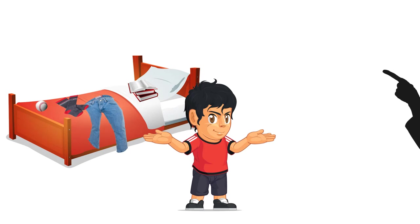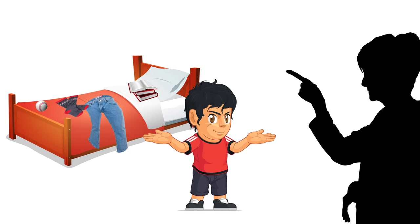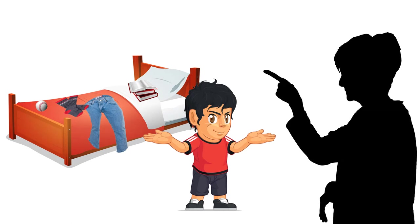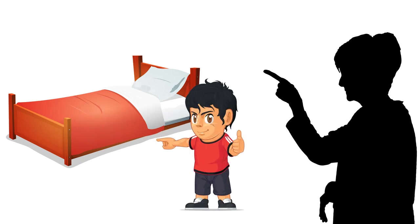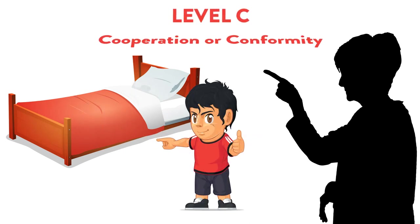Here is a simple example. The parent requests or demands that the teenager make the bed before going to school. The youngster obeys. We would refer to this as Level C, cooperation or conformity on the hierarchy of social development.